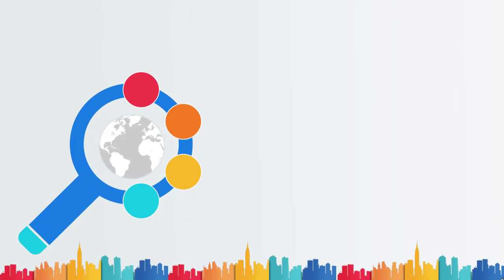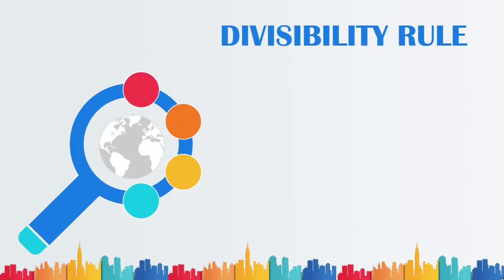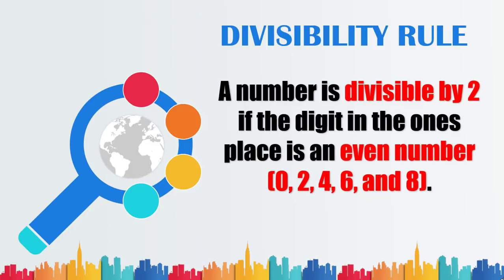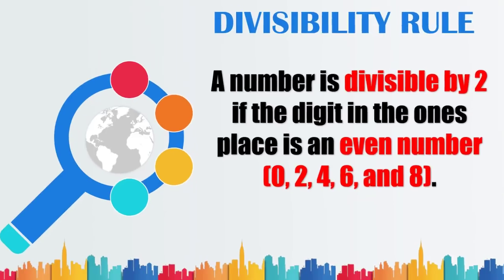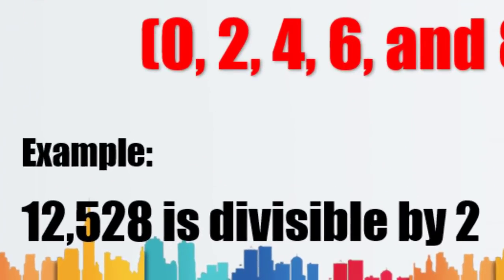Remember the following. A number is divisible by 2 if the digit in the 1's place is an even number — that is 0, 2, 4, 6, and 8. Take note: 0 is an even number. Example: 12,528 is divisible by 2, since the 1's place of the number is 8.